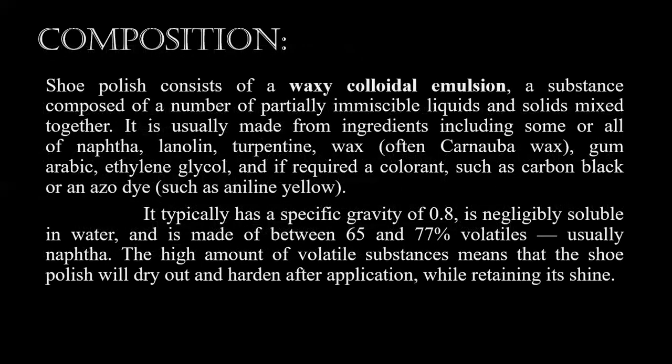Shoe polish consists of a waxy colloidal emulsion — a substance composed of partially immiscible liquids and solids mixed together. It is usually made from ingredients including some or all of: naphtha, lanolin, turpentine, wax — often carnauba wax — gum arabic, ethylene glycol, and if required, a colorant such as carbon black or an azo dye such as aniline yellow.